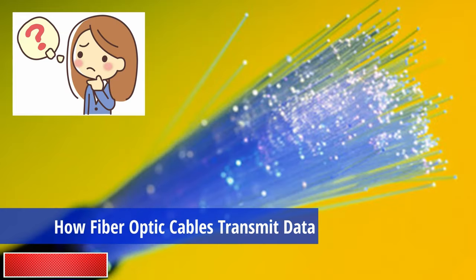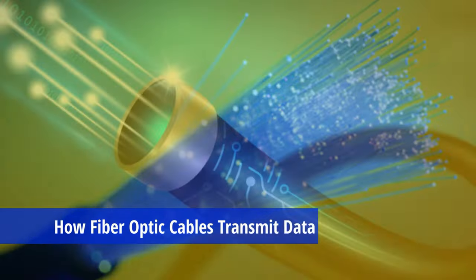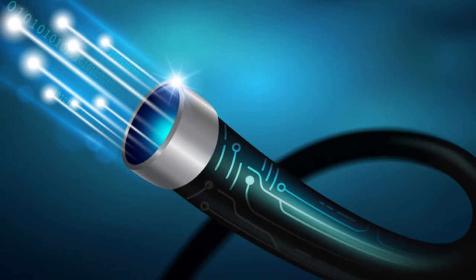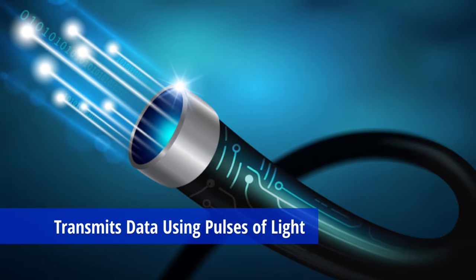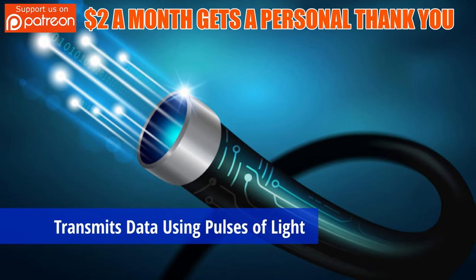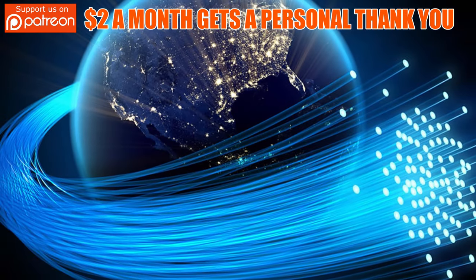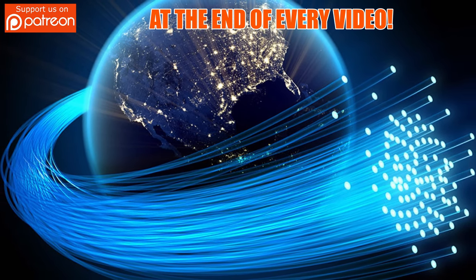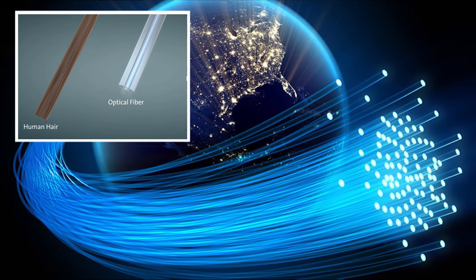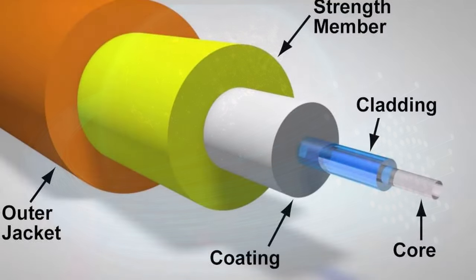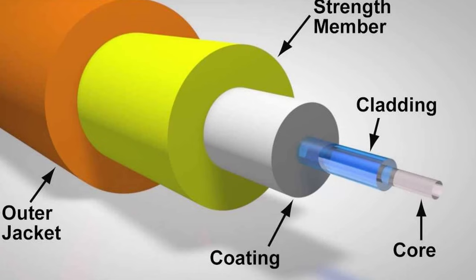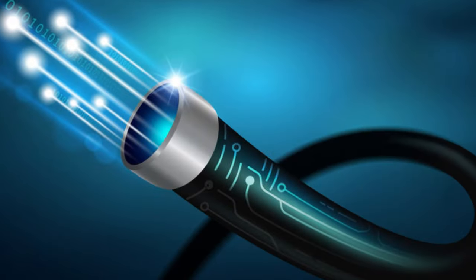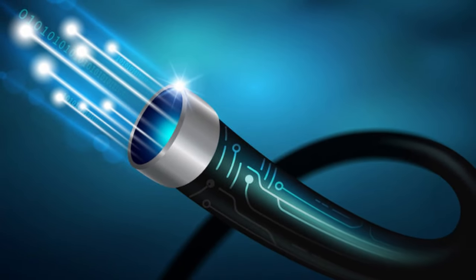So how do fiber optic cables transmit data? Fiber optic cables transmit data via fast traveling pulses of light. Most fiber optic cables are made of dozens or hundreds of optical fibers, and these optical fibers are less than one-tenth of the thickness of human hair. Another layer of glass called the cladding is wrapped around the central fiber and causes light to be repeatedly bounced off the walls of the cable rather than leak out the edges.